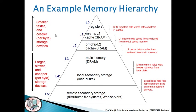At level 0 (L0) there is the register. Level 1 (L1) contains the on-chip L1 cache, which is the primary cache — nothing but static RAM. The CPU registers hold words retrieved from the L1 cache. At level 2 (L2), we have the secondary cache, also called off-chip L2 cache, which is also static RAM. The L1 cache holds data retrieved from the L2 cache memory.